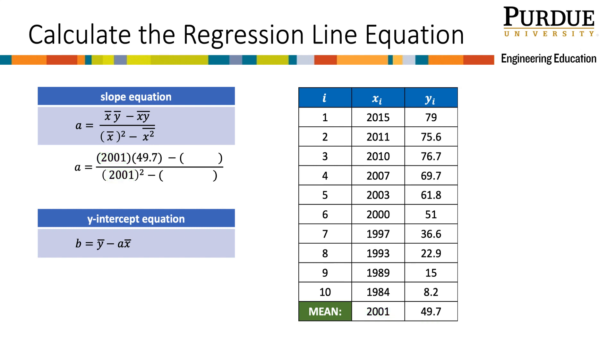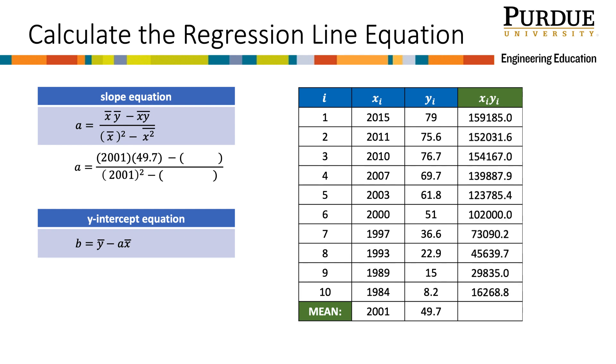Next, I need the mean of the product of x and y, so I will add a column to my table that calculates the product of each x and y. Looking at the first data point, I take 2015 times 79 to get 159,185. I can repeat this process for all other points. Then take the mean of the column to get 99,589. And that goes here in my equation.